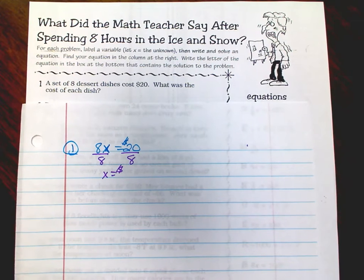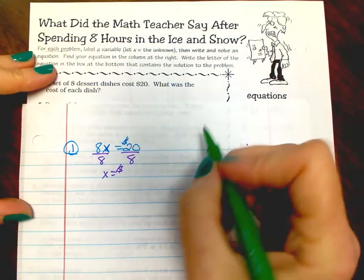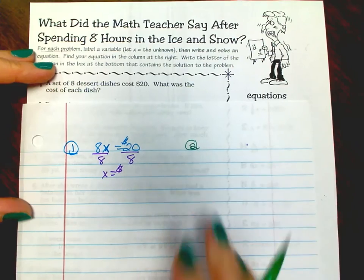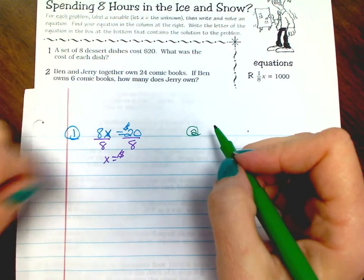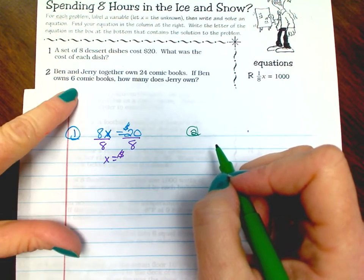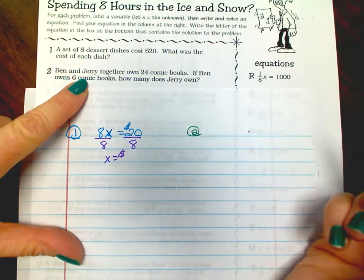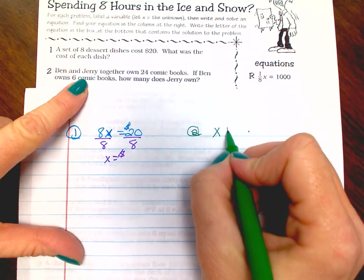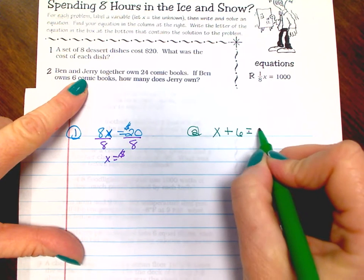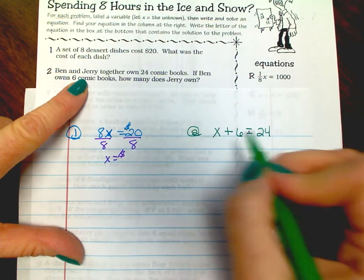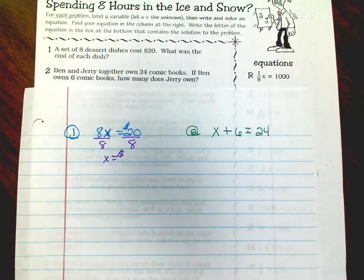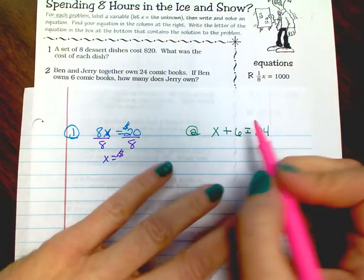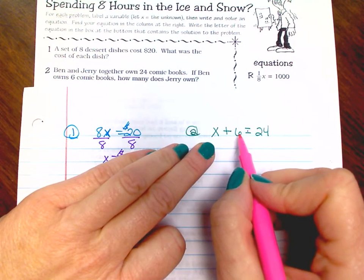Number two: Ben and Jerry together own 24 comic books. If Ben owns six comic books, how many does Jerry own? So Jerry and Ben own 24 comic books, so if you add them together you're gonna get 24. I need to solve for X, find X. What is six doing? It's adding, to get this to cancel out you do the opposite on both sides.